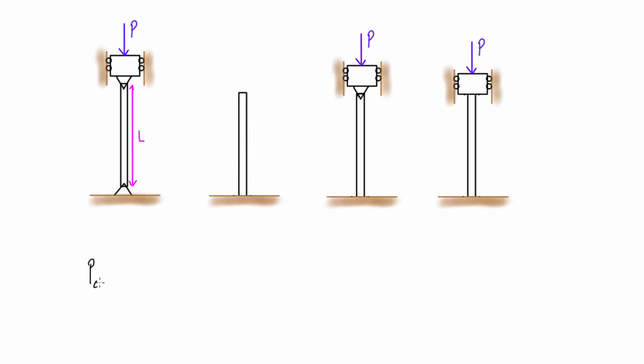When we had that we said that our P critical, that critical load that would cause it to buckle, is equal to pi squared EI over L squared.